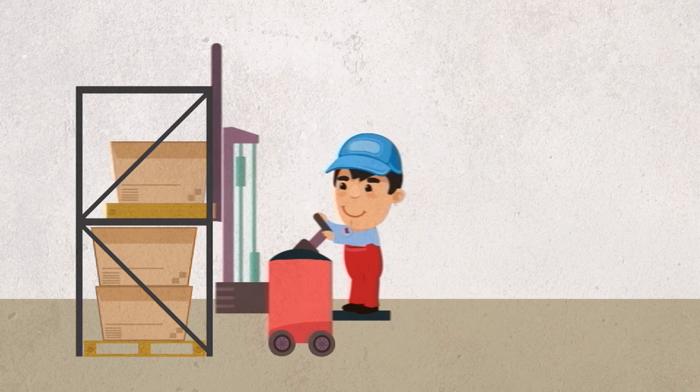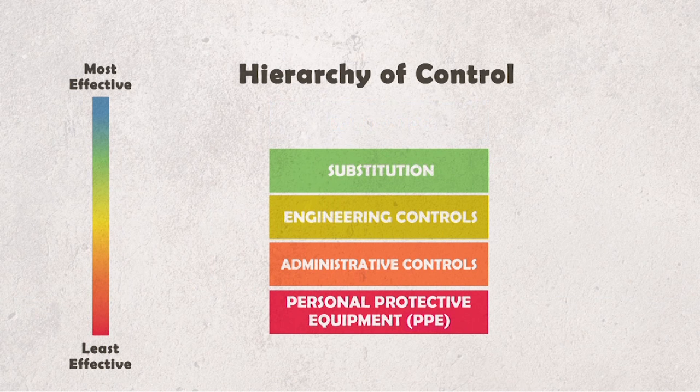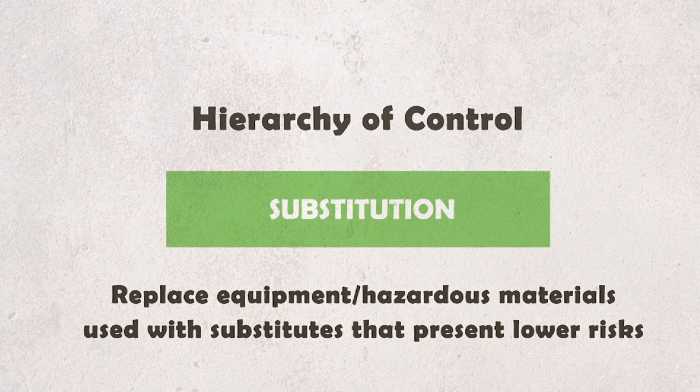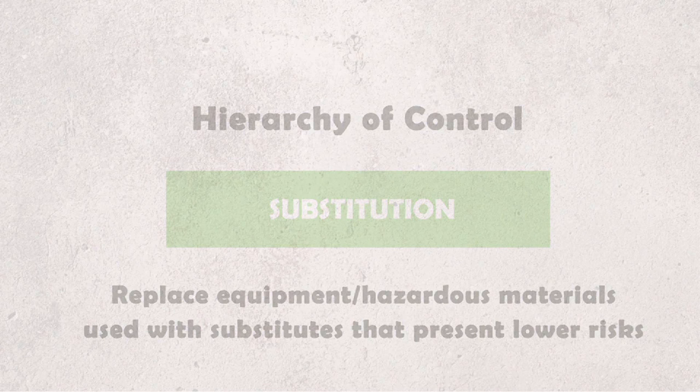If elimination is not possible, the second most effective measure is substitution. This involves replacing equipment or hazardous materials used with substitutes that present lower risk. Some examples of substitution: